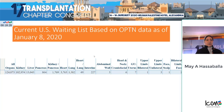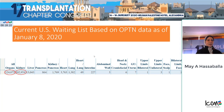Looking at the waiting list based on OPTN data as of January 2020, the number of patients on the waitlist in the U.S. for all organs is more than 124,000. Out of those, almost 103,000 patients are potential kidney recipients.